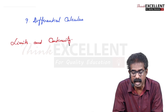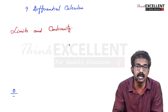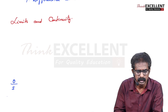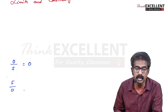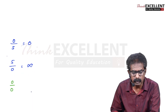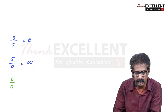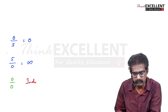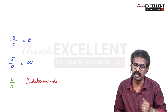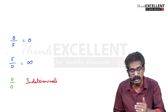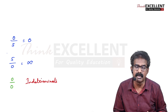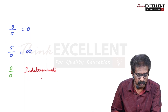So first, let's look at the concepts of limits and continuity. You know the value of zero divided by a number — it is zero. Zero divided by any number is zero. But a non-zero number divided by zero is not defined — it's infinity. What about zero by zero? Zero by zero is called indeterminate. Zero by zero, infinity by infinity — these are all indeterminate forms.